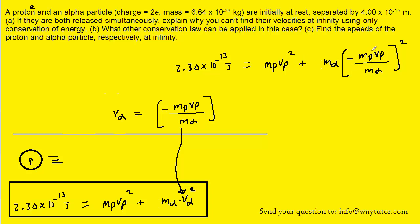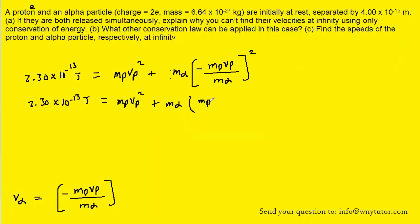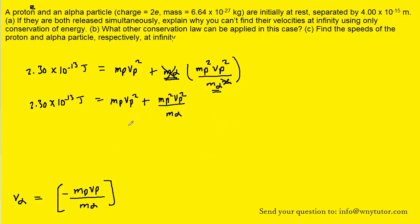To isolate the velocity of the proton, we square both the numerator and denominator of the fraction. The negative sign becomes positive. In the numerator we have the mass of the proton squared times the velocity of the proton squared, divided by the mass of the alpha particle squared. One factor of mass alpha cancels, leaving mass alpha in the denominator. We then factor out Vp squared, leaving the mass of the proton plus mass of the proton squared over mass of the alpha particle.